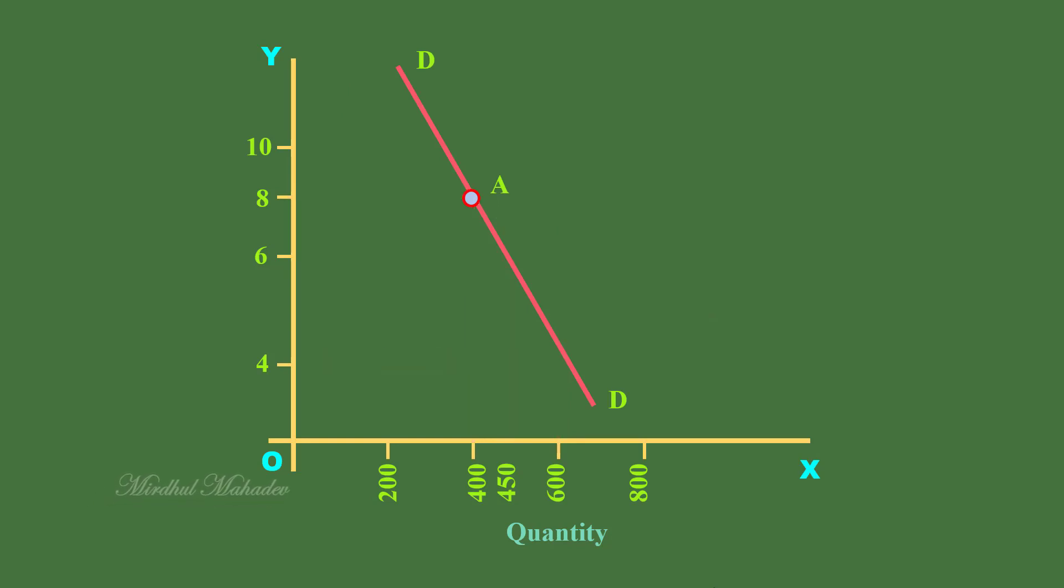We shall start from point A on the proportional demand curve. A firm is operating at point A. It sells 400 units at Rs. 8. If the firm slides down to point C along the proportional demand curve by reducing its price to Rs. 6, it can sell 450 units. Instead, it develops perceived demand curve DD. It is more elastic than the proportional demand curve. It slides down to point B along the perceived demand curve and sells 600 units at the same price, Rs. 6.